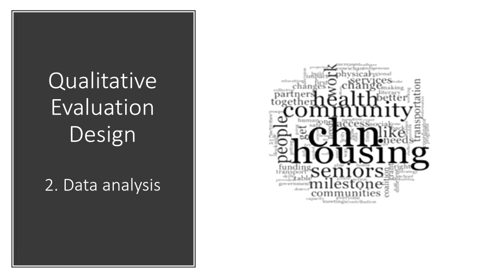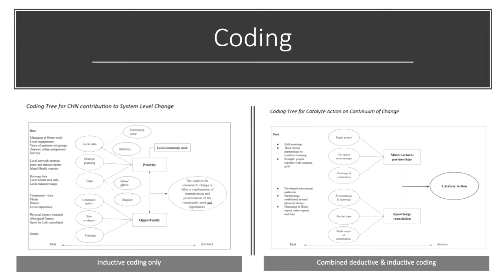For data analysis, available quantitative data were presented using descriptive methods, and qualitative data were analyzed using both deductive and inductive methods. In vivo coding — using exact words from the transcripts — and descriptive methods were used to code the data, using Word, Excel, and NVivo. There are two examples of coding trees on this slide: one is inductive coding, and the other is a combined deductive and inductive approach, where I used 'catalyzed to action' from the continuum of change as a deductive code and then inductively lifted additional data from participants that contributed to that category.